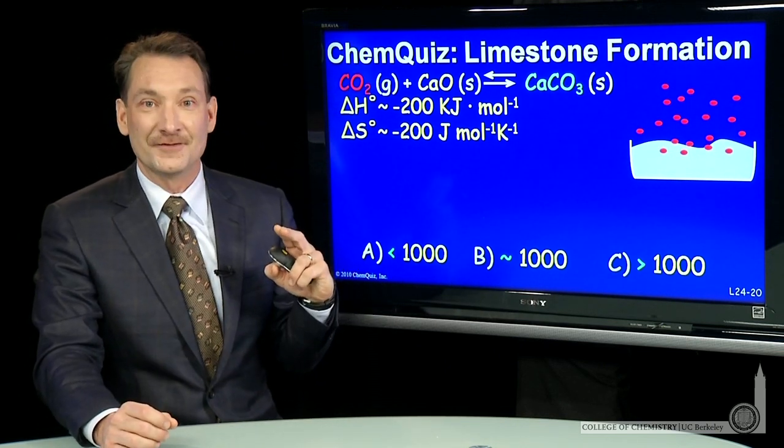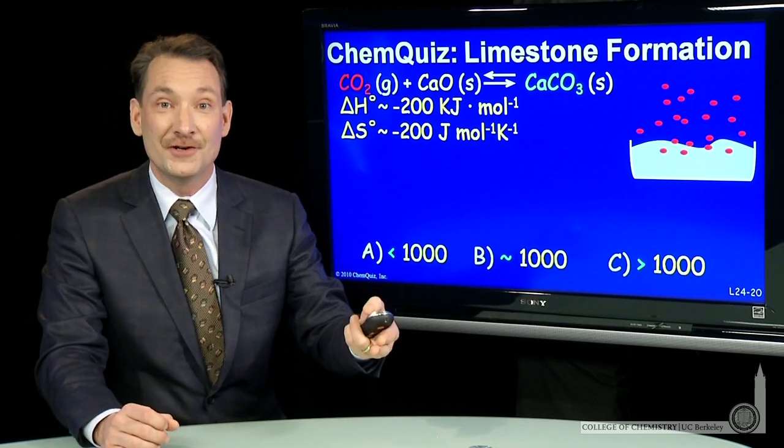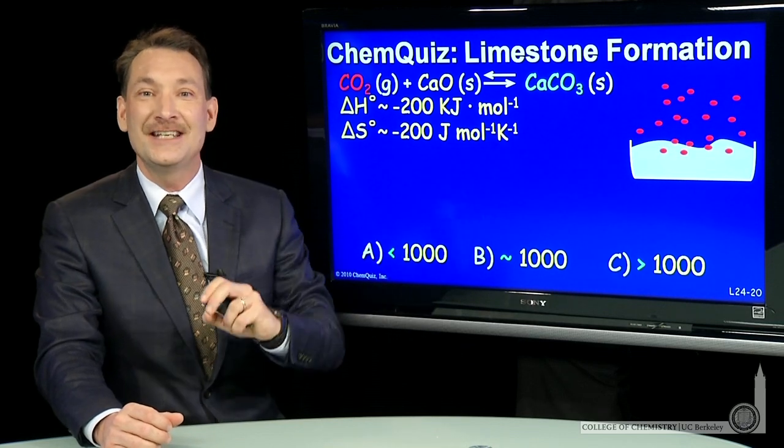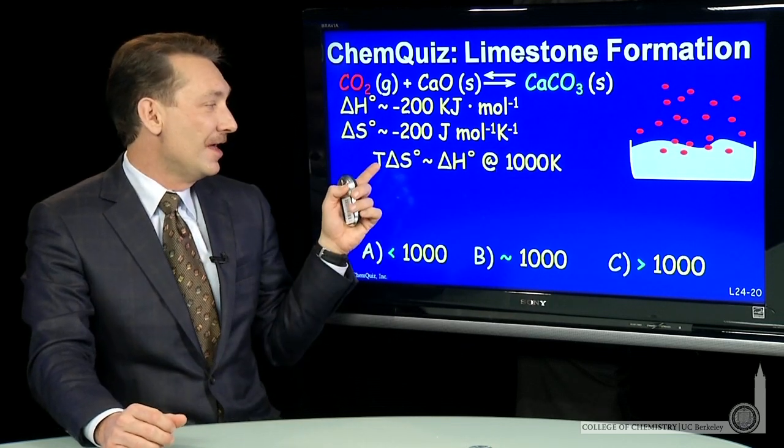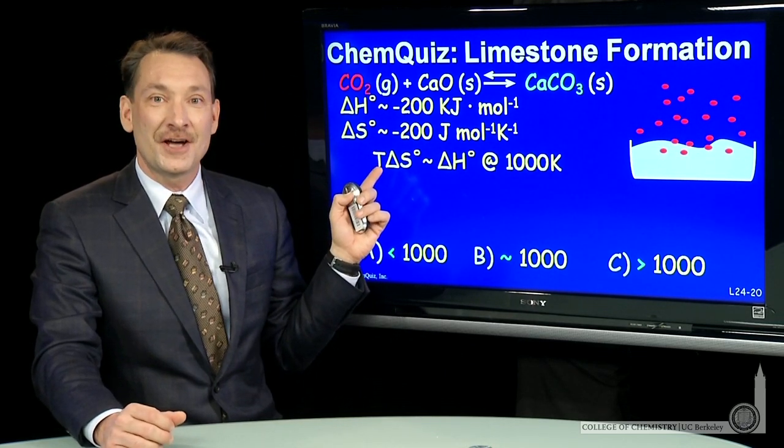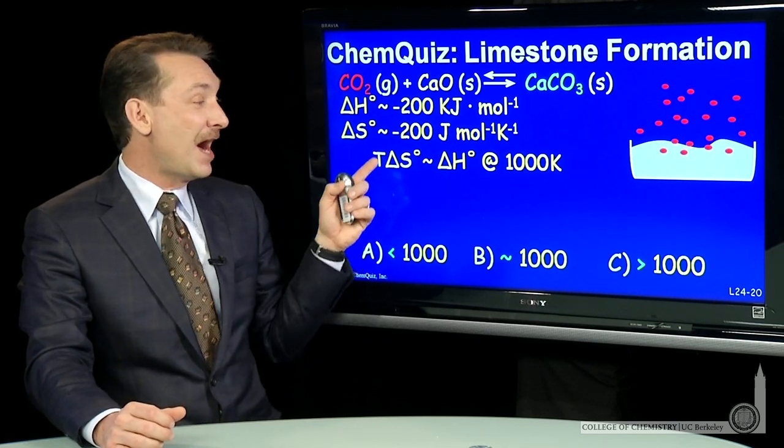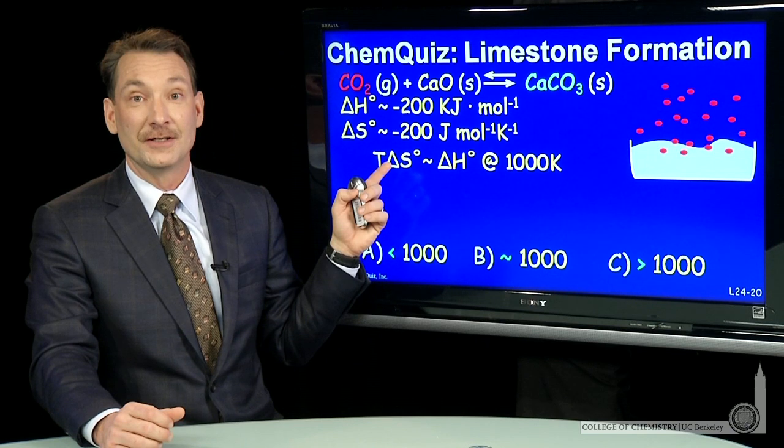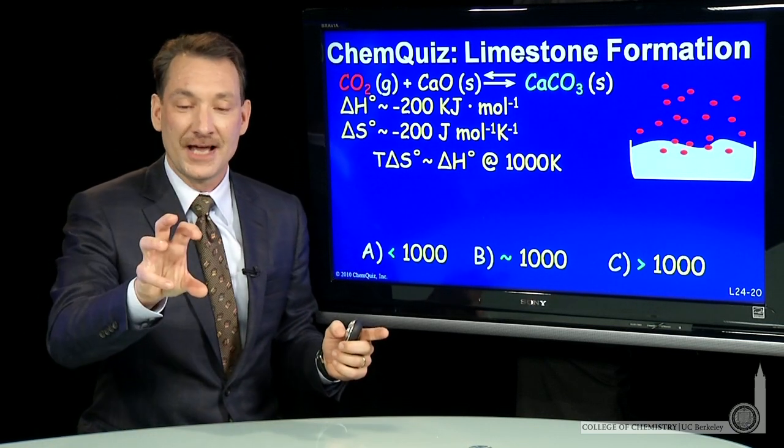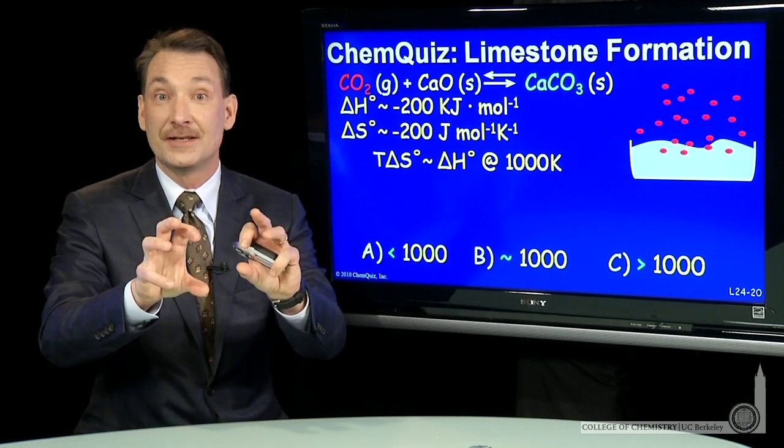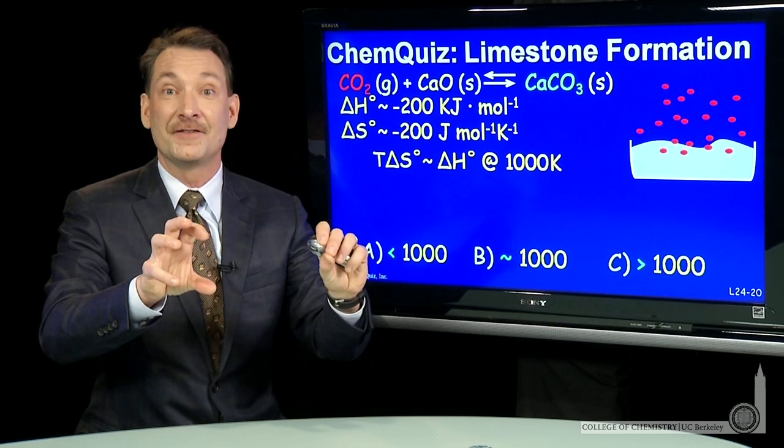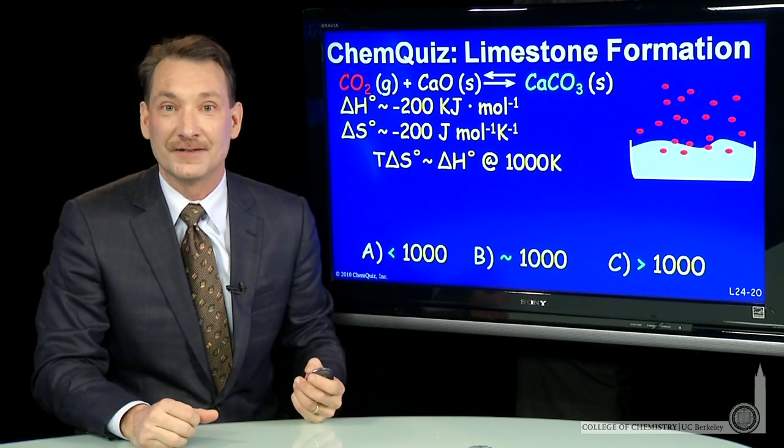Now, delta S is negative. So if I'm talking about the free energy, I have a minus T delta S contribution. The minus T delta S contribution with a minus delta S will have a positive overall contribution. That is, delta S minus T always positive, and a negative sign in front of that makes that contribution always positive.